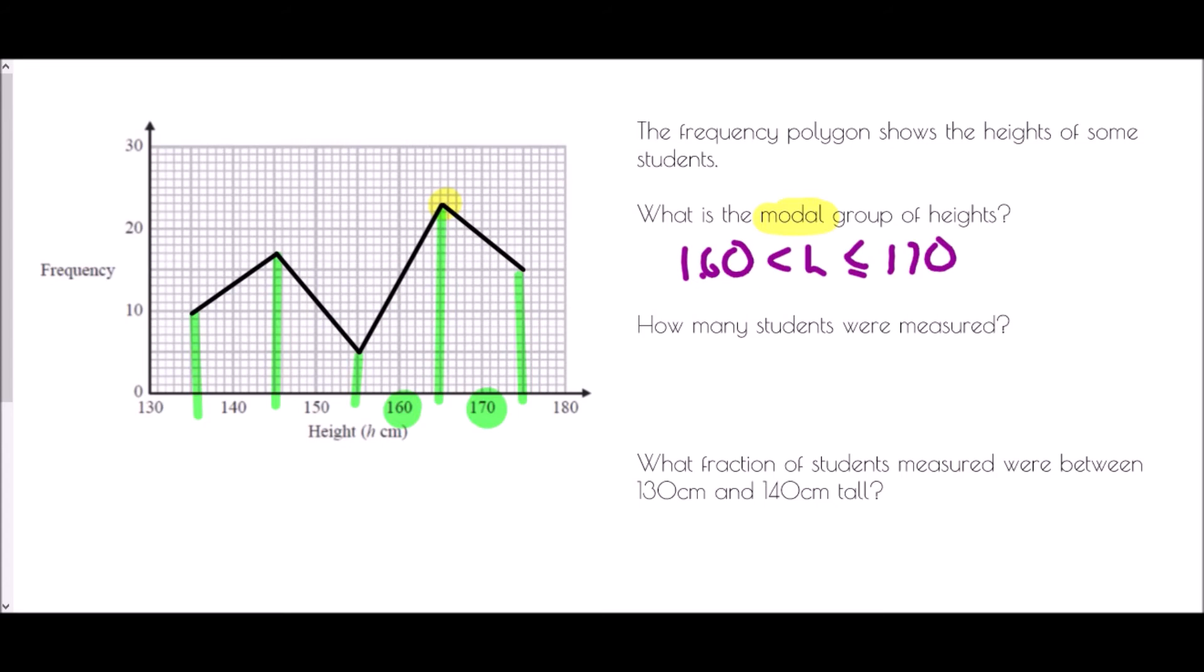It then asks how many students were measured. And so in this case what we just need to think about is what the frequencies were. So in the first group the frequency is 10. In the next group, if we read that along, it is at 17. And then in the third group we are at 5. In the fourth group we are at 23. And in the last group we are at 15. And so if we add all of those together what do we get? Well, 10 plus 5 plus 15, well that is 30, 47, 50, 70 students in total. So 70 students were measured.